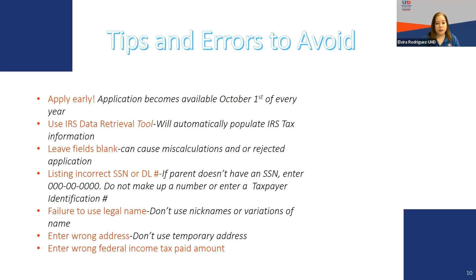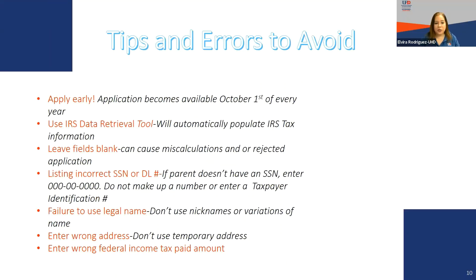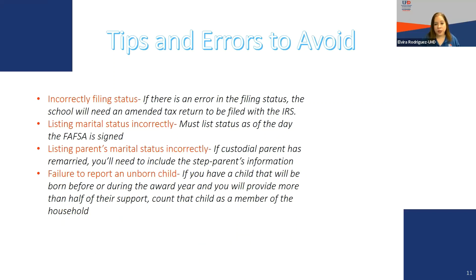Failure to use your legal name is another common error. Many of us have nicknames or variations of our name — please use your legal name on your FAFSA application, as failure to do so could cause rejection or require additional documents. Don't use a temporary address; use your permanent address. Also avoid entering the wrong federal tax paid amount. If you are manually entering tax information, be sure you are putting the correct information as reported on your taxes. If there is an error in the filing status, the school will ask you to amend that tax return and have it filed with the IRS before proceeding.